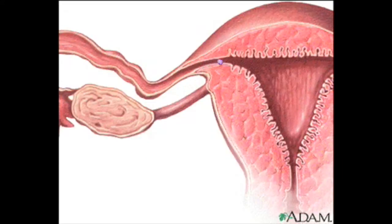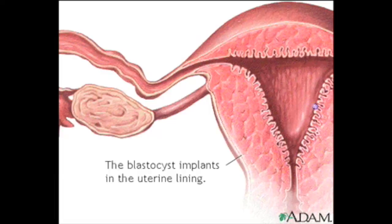The blastocyst, though only the size of a pinhead, is actually composed of hundreds of cells. During the critically important process of implantation, this structure must attach itself to the uterine lining, or the pregnancy will fail to survive.